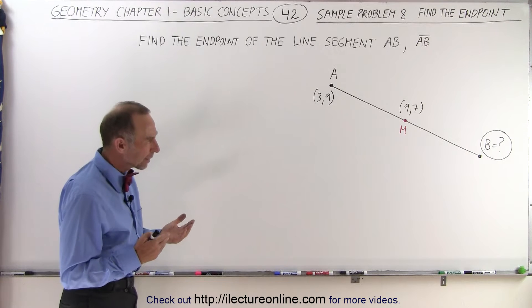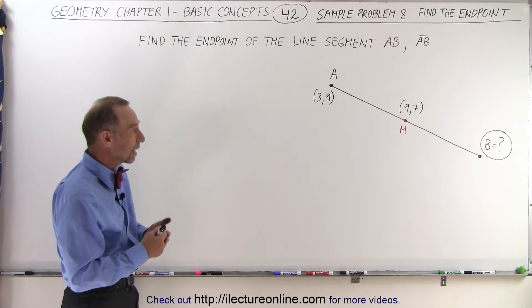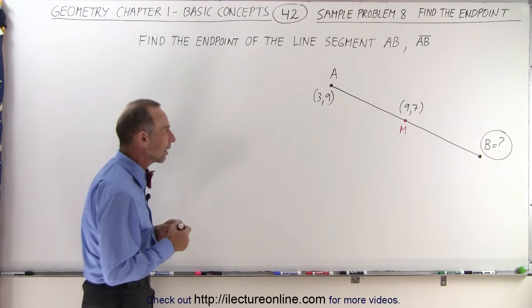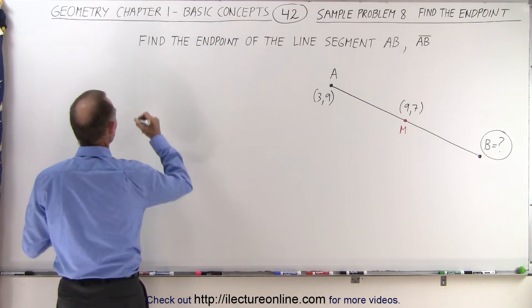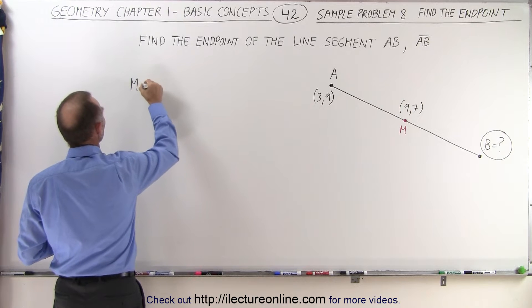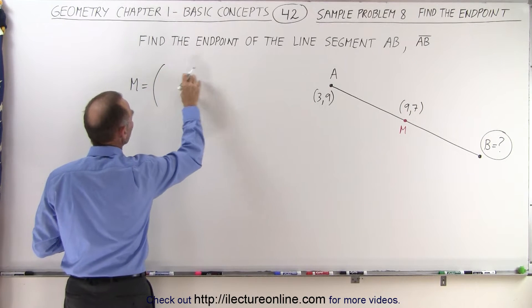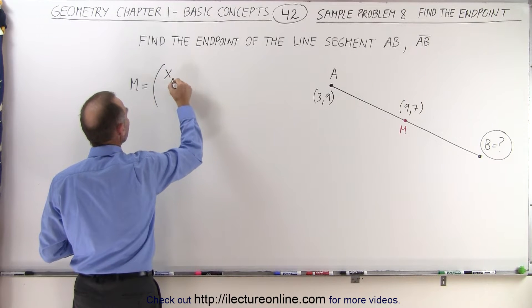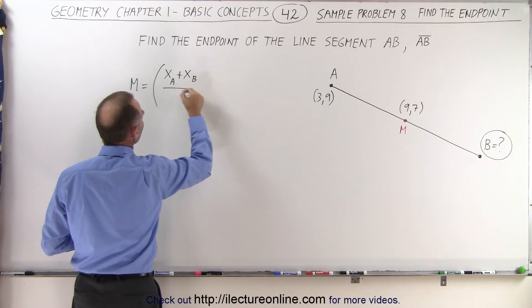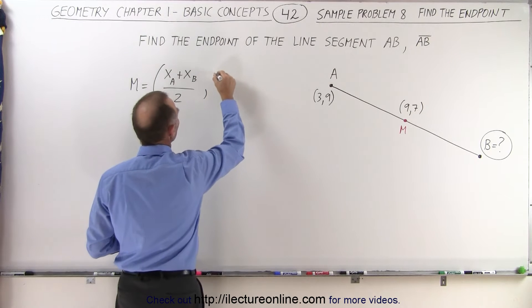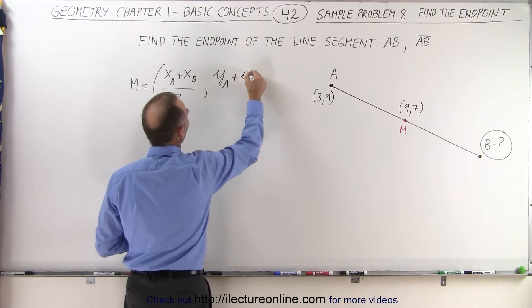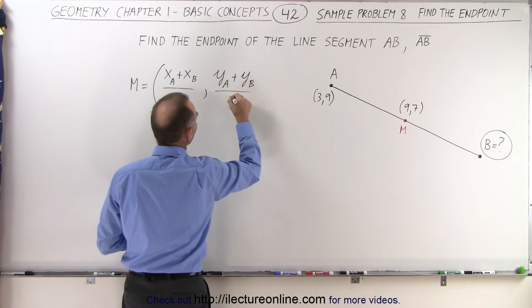Well, let's start with that midpoint formula again. That probably will give us a good idea of how to go about doing that. So we know that to find the midpoint, that is equal to the x and the y coordinate which are obtained by taking x sub a plus x sub b and dividing it by 2, and taking the y coordinate of a and adding that to the y coordinate of b and dividing that by 2.